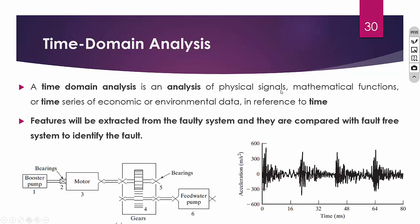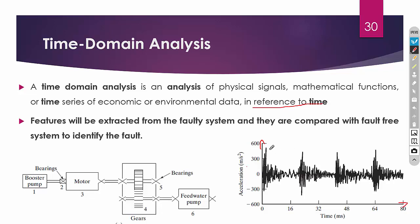Time domain analysis is the analysis of a physical signal, mathematical function, or time series with reference to time. We measure the signal with time as reference — the x-axis is time and the y-axis is amplitude, which may be displacement, velocity, or acceleration. The raw data taken from an accelerometer is in time domain format. From this data we can extract features such as the maximum value, minimum value, and mean value of the signal.